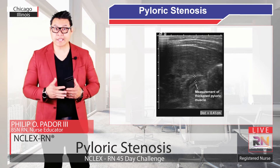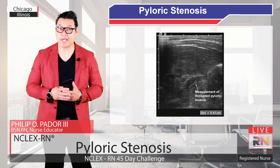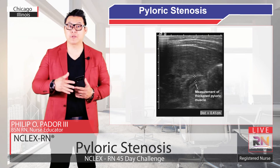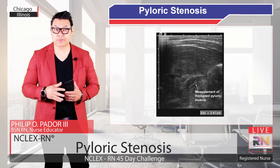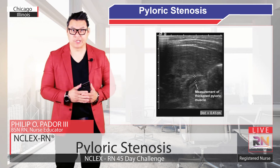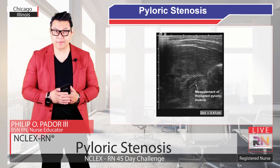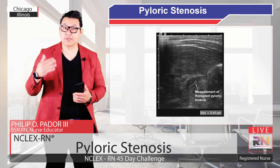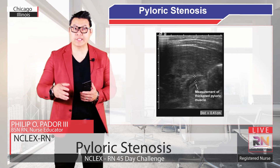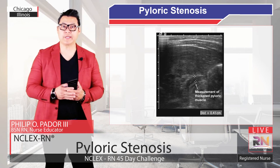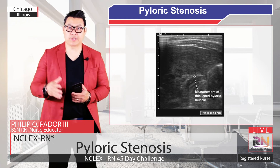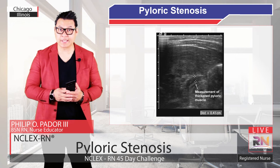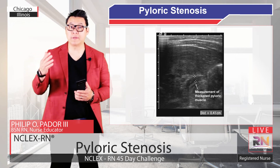Another study that can be performed is an upper GI in a patient with pyloric stenosis. You can see the apple core or string sign toward the right of this image, where you see an elongated pyloric canal given that the muscles are making this canal smaller than they normally would be on upper gastrointestinal studies.